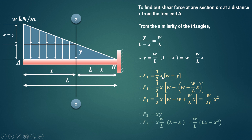So F1 equals one-half X into (W minus Y). Substituting Y equals W minus (W/L)X: taking the negative sign inside, the W terms cancel, leaving one-half X into (W/L)X. That is W upon 2L times X squared. So this is the load F1 due to the uniformly varying load at any section XX.